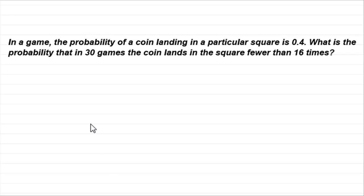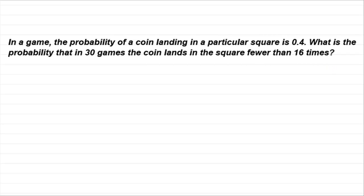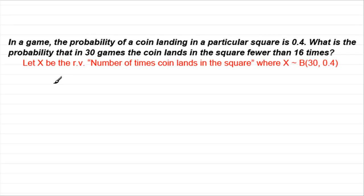On that assumption, what we've got here is a typical binomial model. In a game, the probability of a coin landing in a particular square is 0.4. What is the probability that in 30 games, the coin lands in the square fewer than 16 times? To do this, we would define a random variable: let X be the random variable — the number of times the coin lands in the square — where X is distributed binomially, with 30 trials and probability of success P = 0.4.